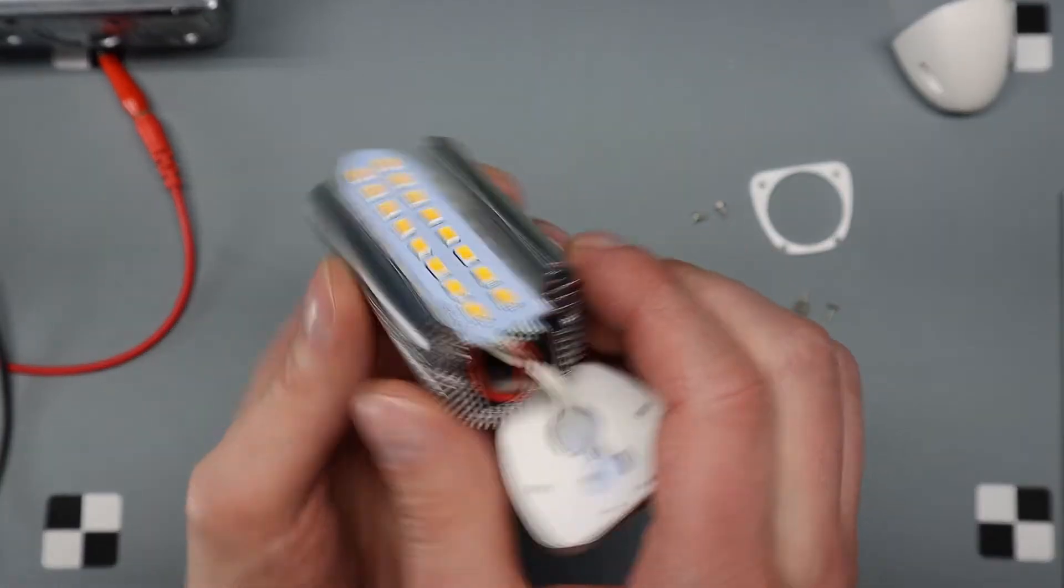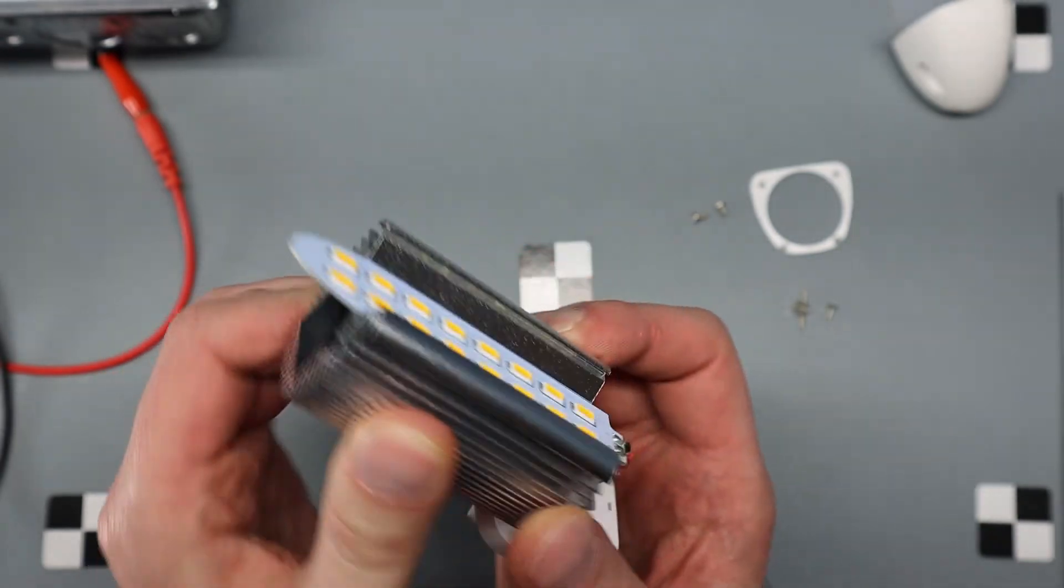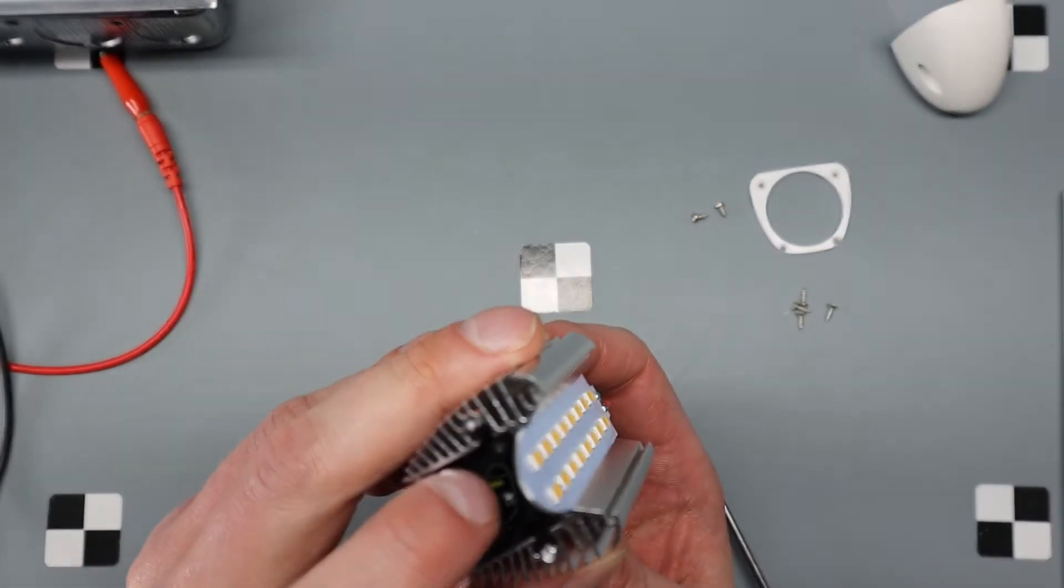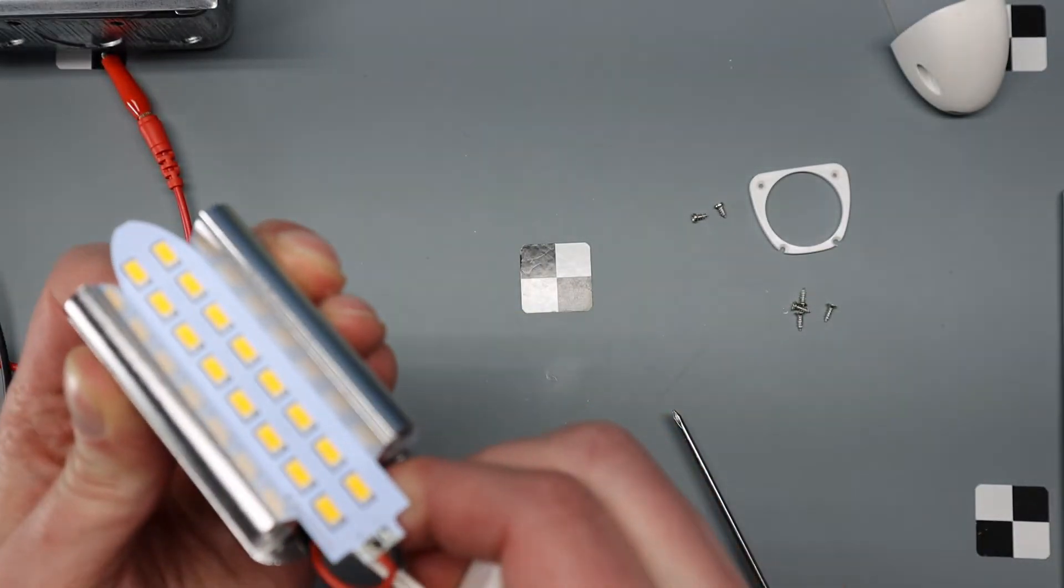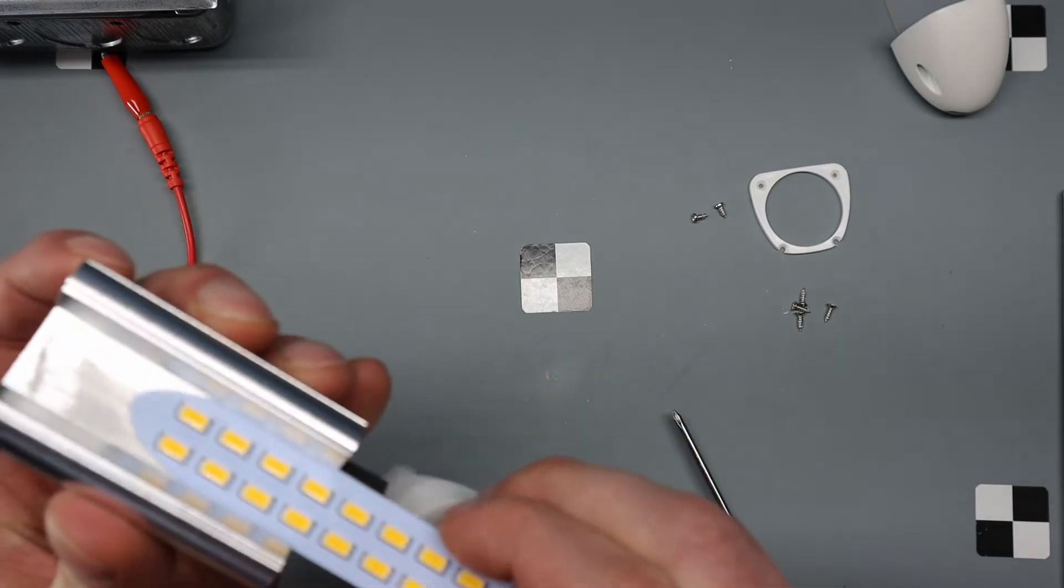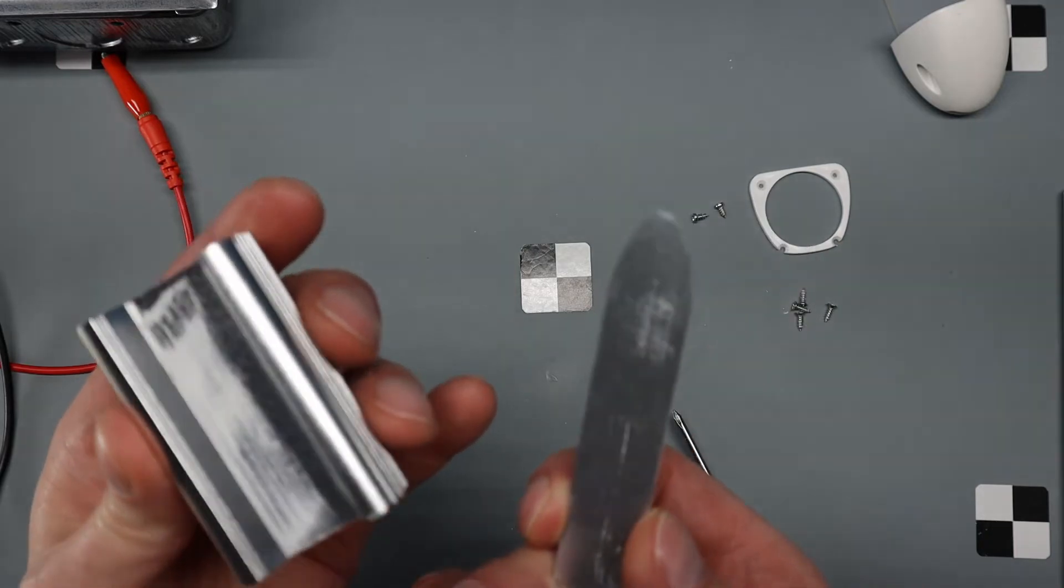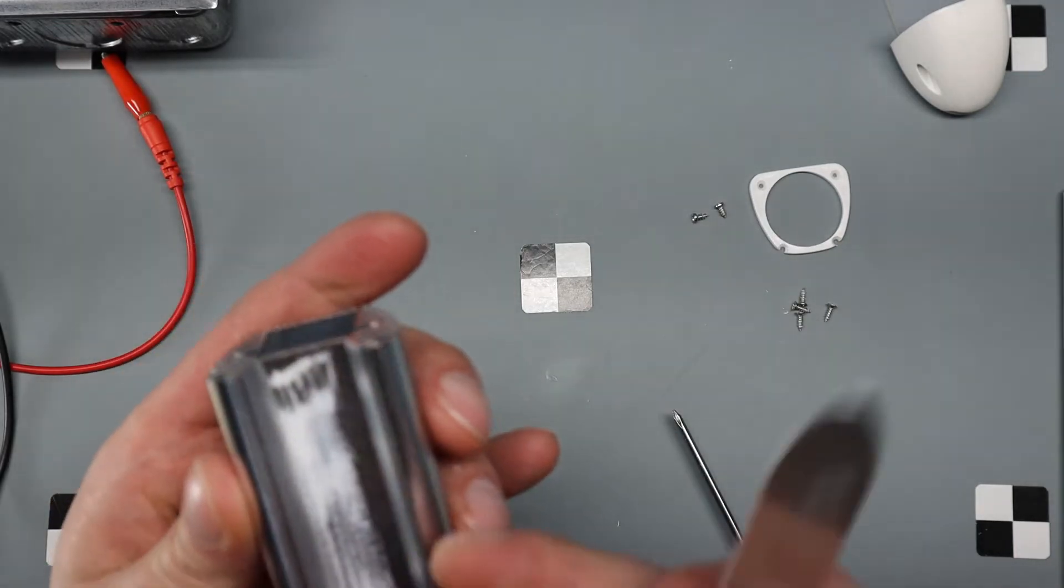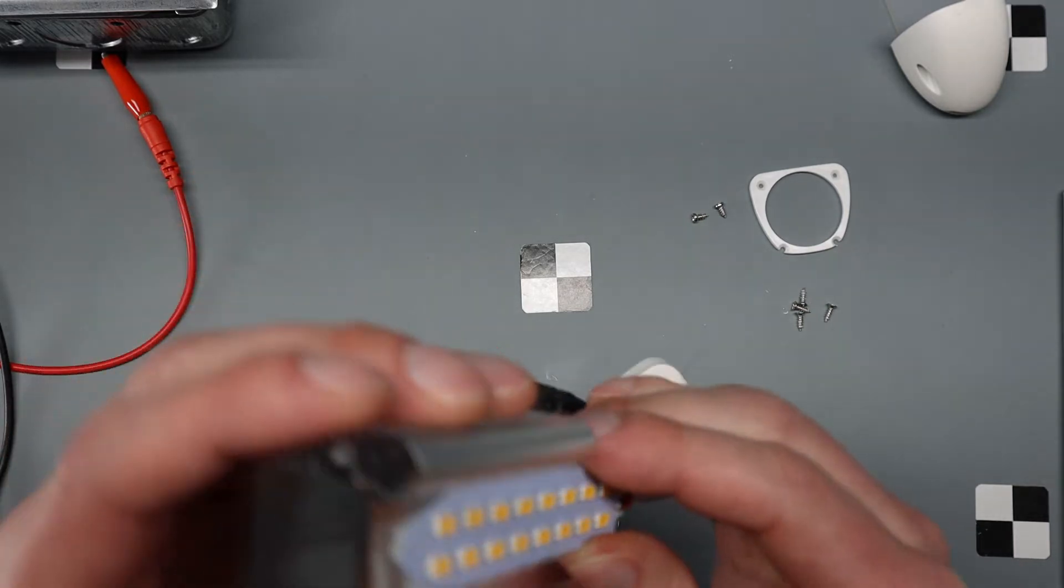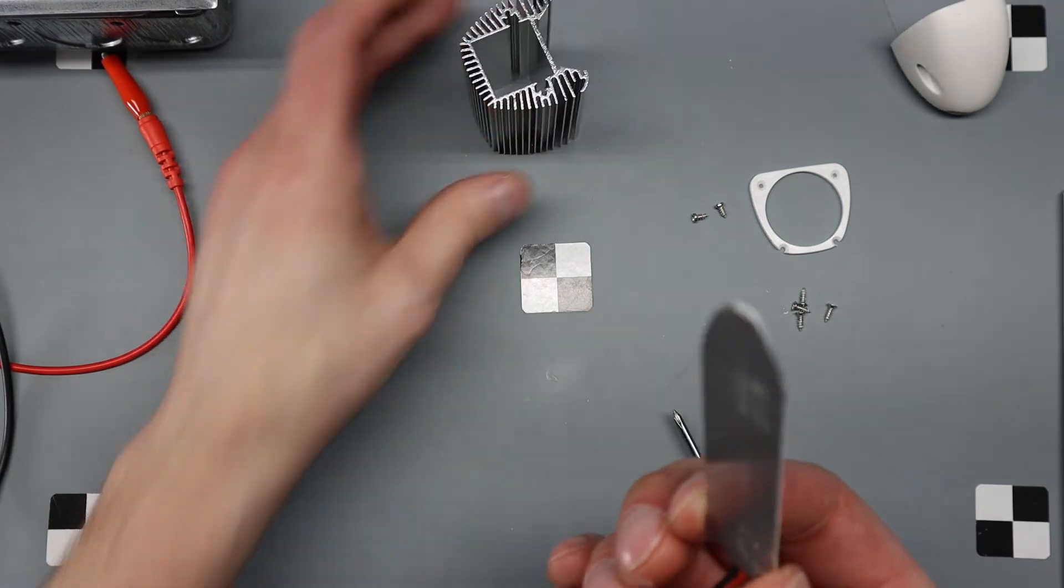So in there we have this giant extruded probably heat sink and you got the driver sitting in there shrink-wrapped. And that's supposed to be thermal paste or something, there's barely any on there. This is just sitting in there so loosely, I doubt this is probably even doing anything.